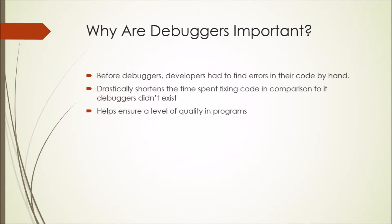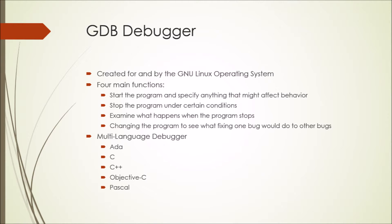Debugging has become an essential step in the programming process. Before there were debuggers, all code had to be fixed by hand without any real help from the machine, other than some very basic information. With debuggers, however, the time that it takes to fix code and find all the bugs is drastically shortened. Debuggers also help by giving a certain level of quality guarantee to code — if it passes the debugger, it's not going to have any obvious errors or crashes, and while it may not be perfect, it's better than it would have been without debuggers.